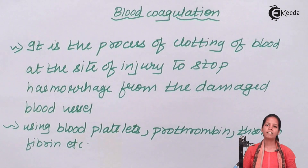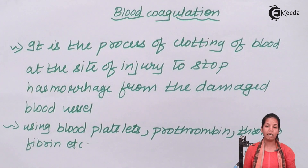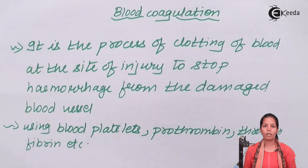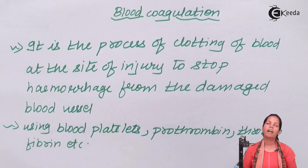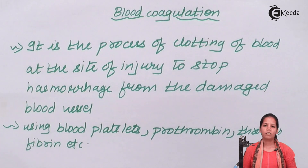So students, in this part of the chapter we covered the blood clotting mechanism, which is very crucial. In hemophilia — also known as the bleeder's disease, very common in Queen Victoria's family — this mechanism doesn't work. Imagine a person without clotting factors: even a slight cut would be fatal or life-threatening. I hope you are all clear about the mechanism of blood clotting and what blood clotting is. Thank you.